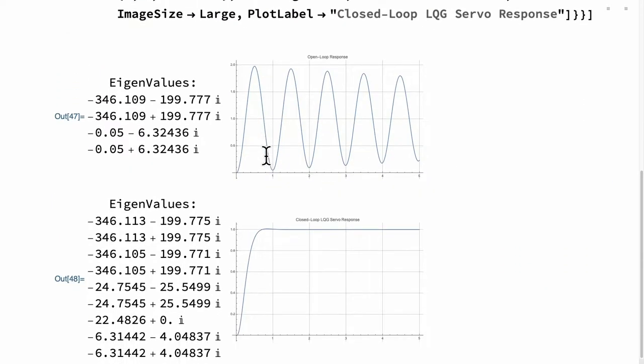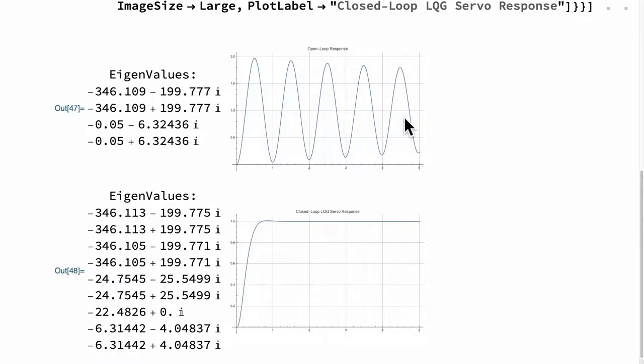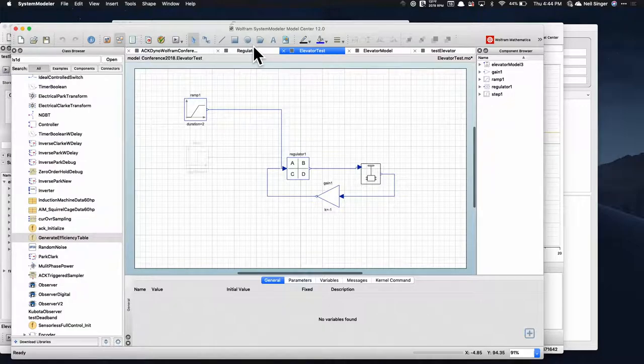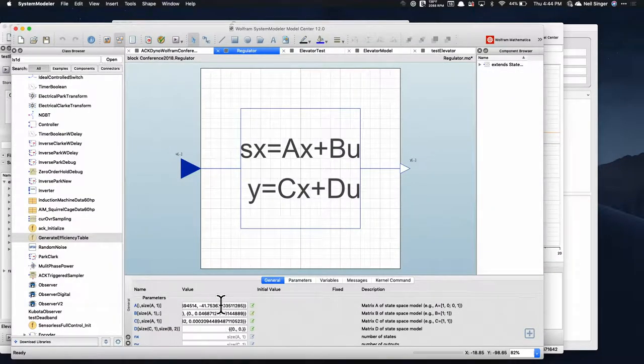We look at the output response, and here's the original output response, which is if you just open loop step it, and then here's the new controlled response. Well, is that really what we get? Let's find out. Next step is we send this back to System Modeler. I just sent it back to System Modeler. If I open up System Modeler right here and I click on my regulator, what you'll see is all these numbers down here, those came right out of Mathematica. I made a regulator, and I sent it back into System Modeler. So my regulator now is all that stuff I designed in Mathematica.